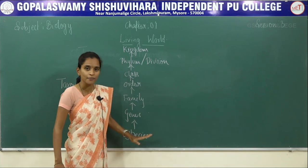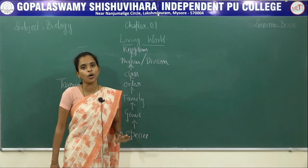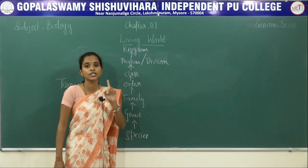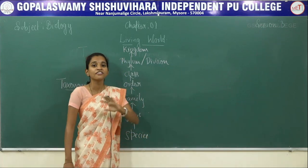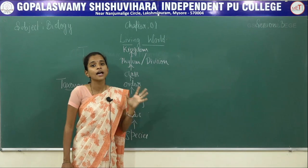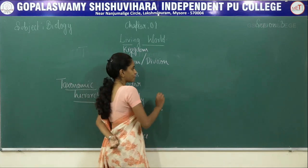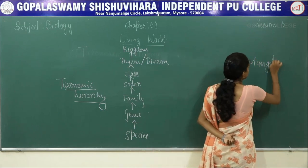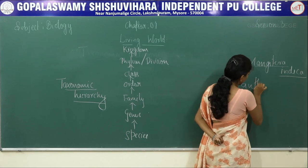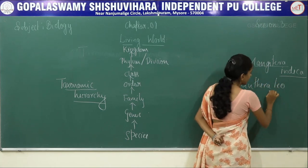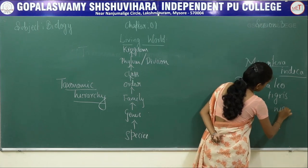First is species. We start from the base — the single unit — that is species. Species includes the individual organism, meaning you can identify and separate an individual organism from the group. When you compare different species, you can find some similar anatomical as well as morphological characters.